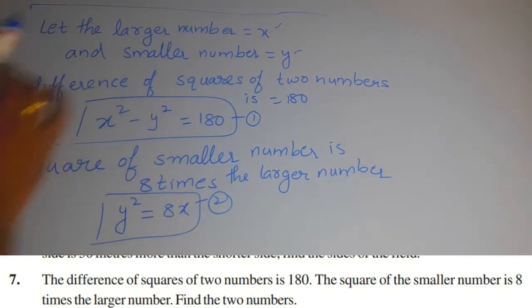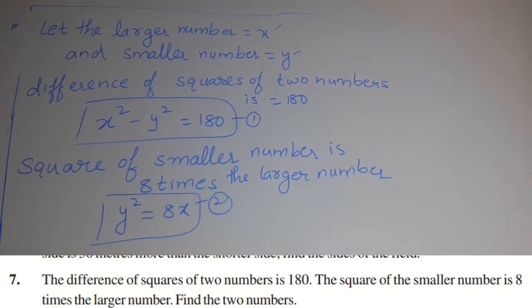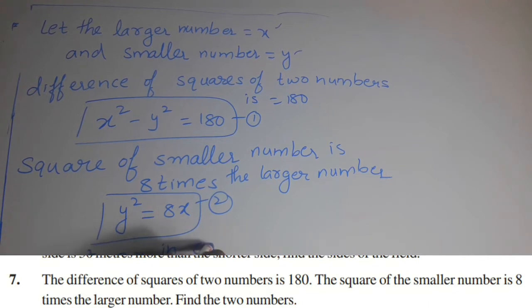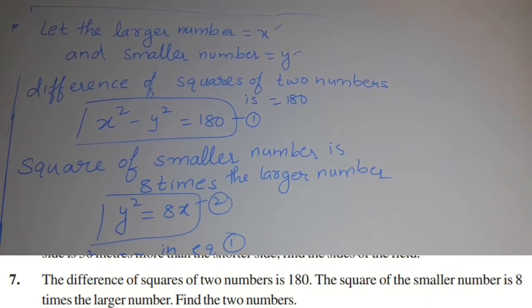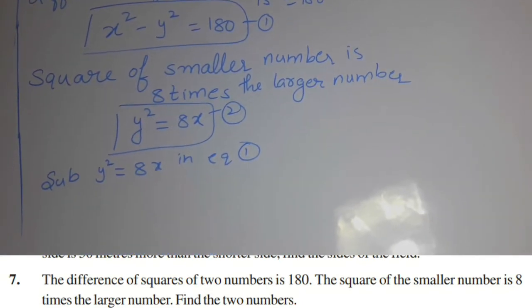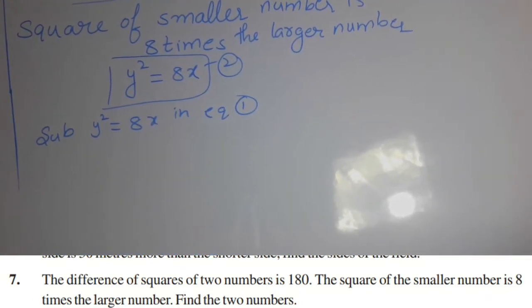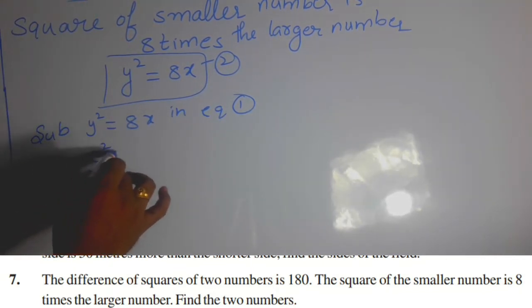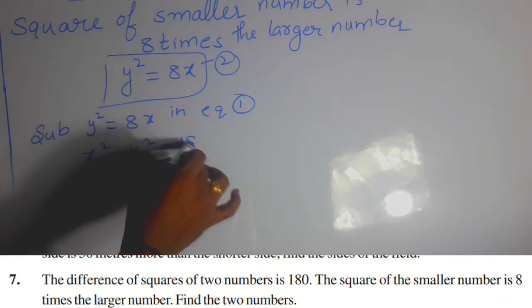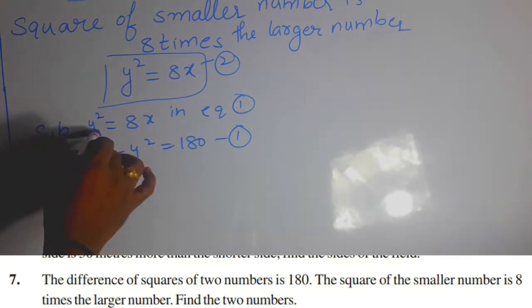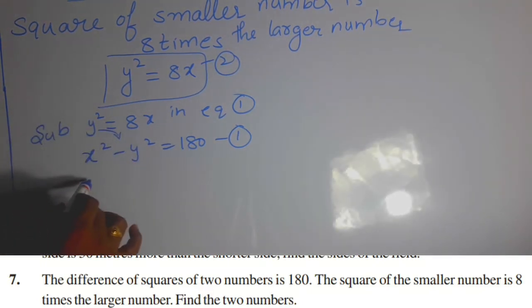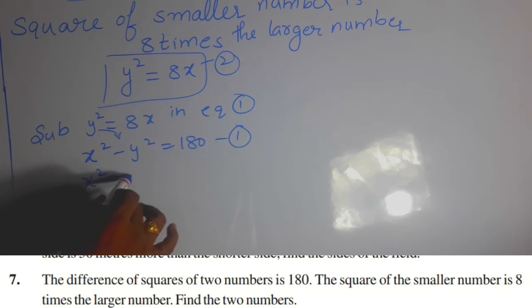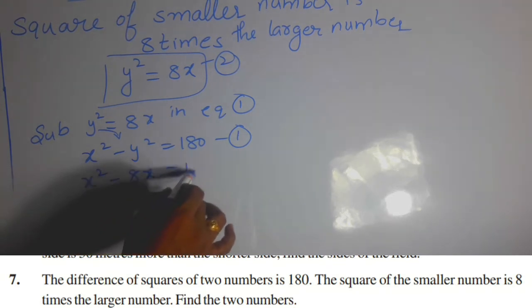In the next step, substitute the value of y squared in equation number 1. Substitute y squared equals 8x into equation number 1. We have x squared minus y squared equals 180, which is equation 1. Now substituting, we get x squared minus 8x equals 180.